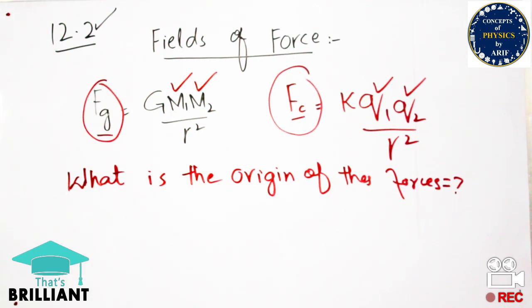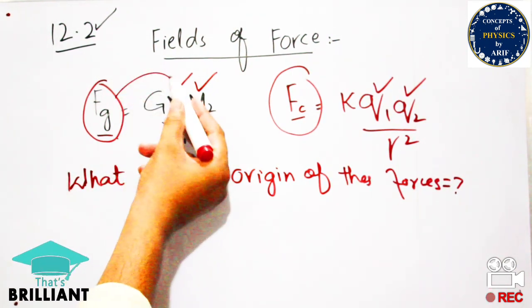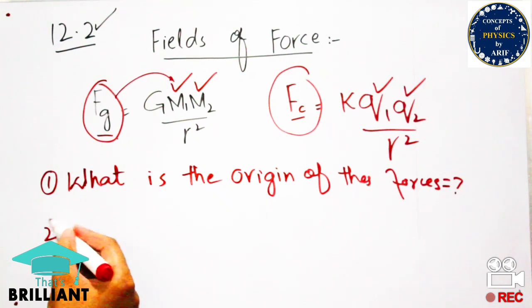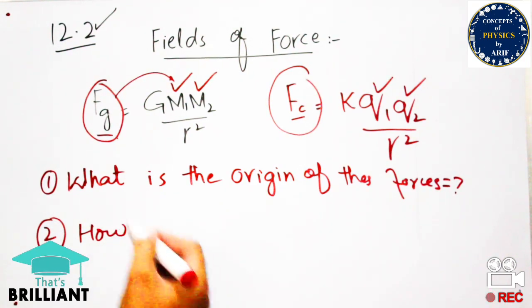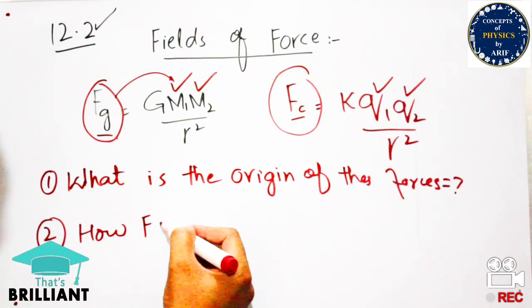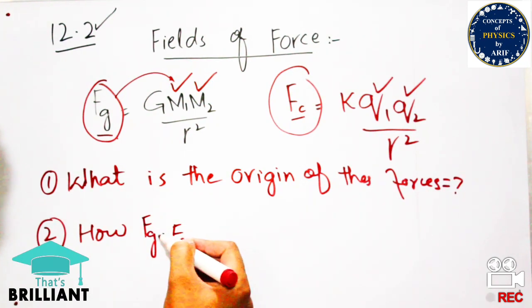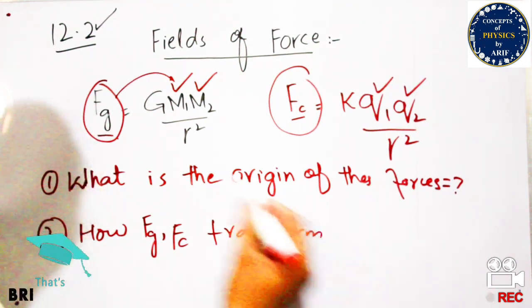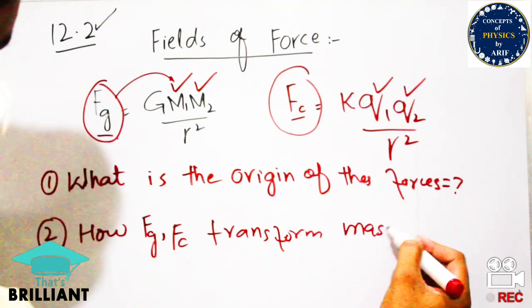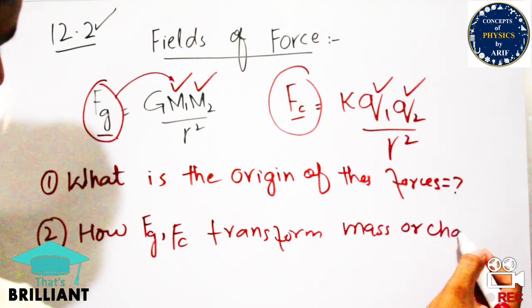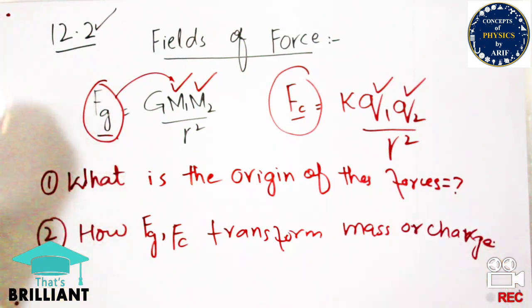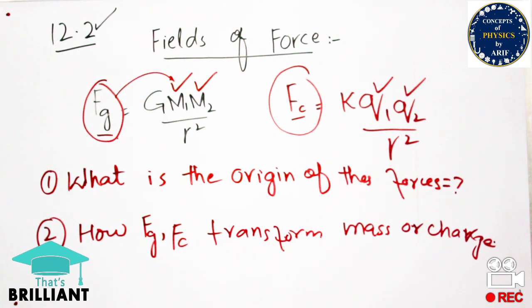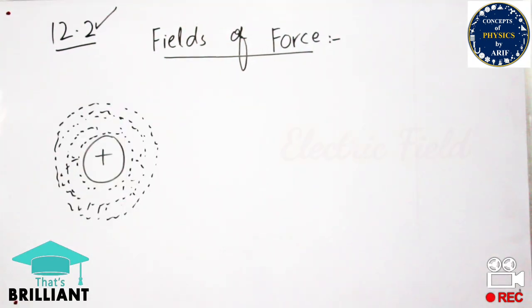Another question is: what is the effect of gravitational force on mass, and how is Coulomb force present between two charges? What is the vicinity of these two forces? How do gravitational force and Coulomb force transmit from masses or charges? These are the two key questions we will discuss.